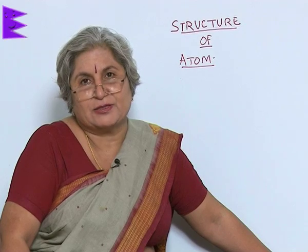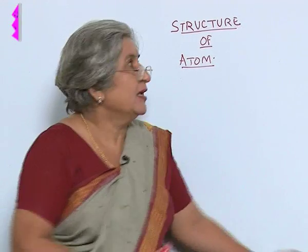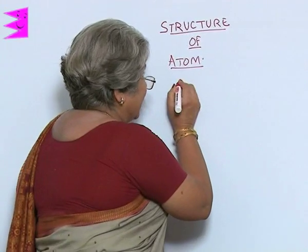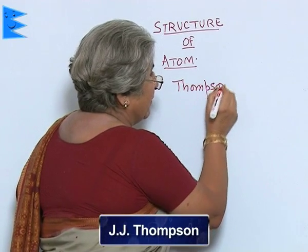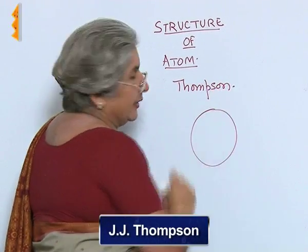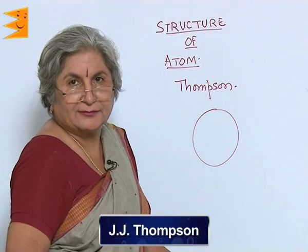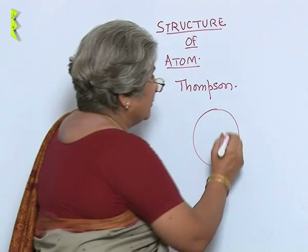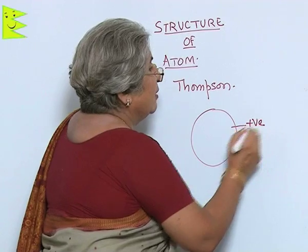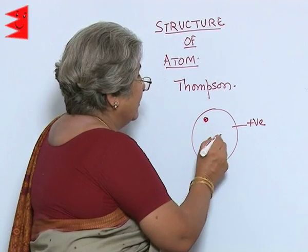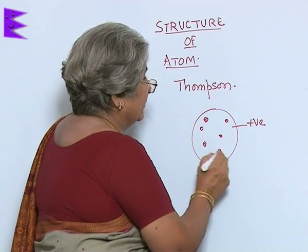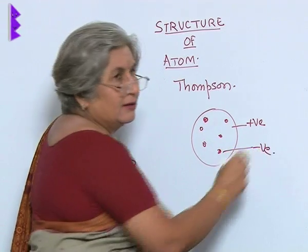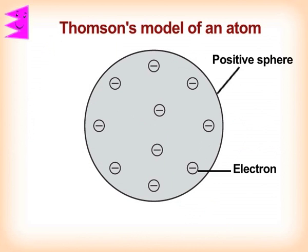One scientist, Thomson, said that probably the atom is like a pudding — a positively charged pudding sphere on which there are negative particles, just like a normal pudding where there are fruits or nuts on top.